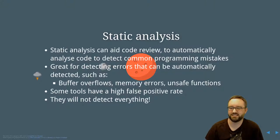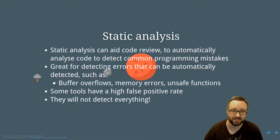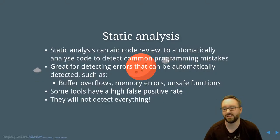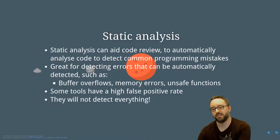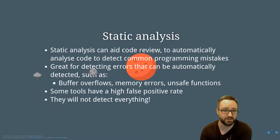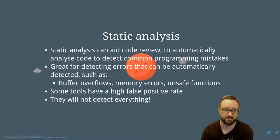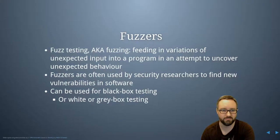Static analysis aids code reviews and automatically analyzes code to detect programming mistakes. It can detect things like buffer overflows, memory errors, and unsafe functions, if you have the source code. Some tools will have a high false positive rate or false negative rate, so they're not perfect and won't detect everything, but it's a starting point — it's better than not having it.